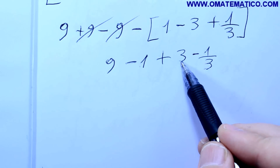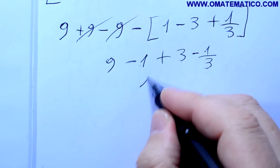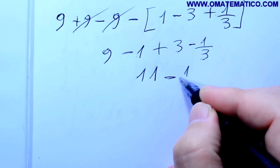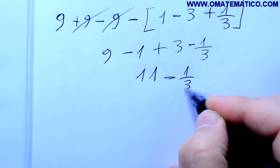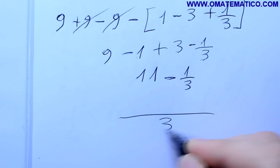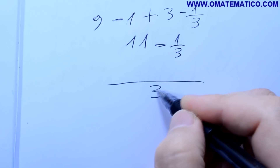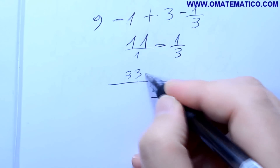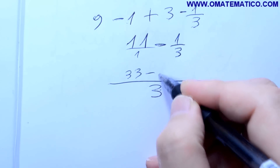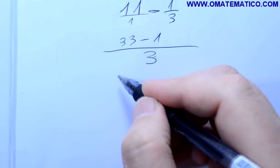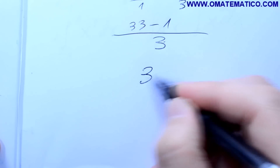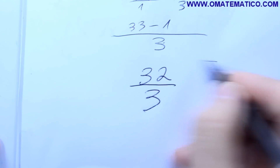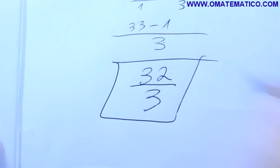Aqui dá 9 menos 9, os 9 cancelam, sobra 9. Aqui dá menos 1, com o sinal trocado dá mais 3, menos 1 terço. Então dá 9 menos 1 dá 8, vai dar 11 menos 1 terço. Tirando o mínimo múltiplo comum que é 3: 33 menos 1, vai dar a resposta 32 sobre 3.